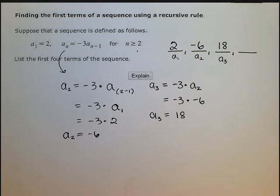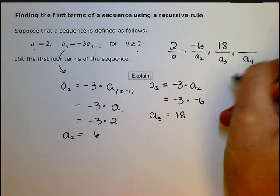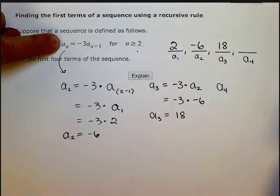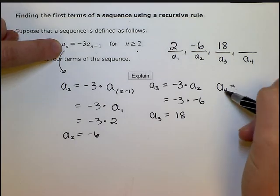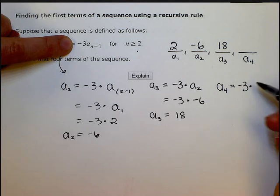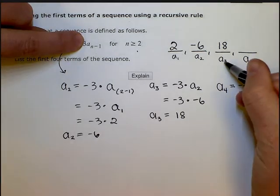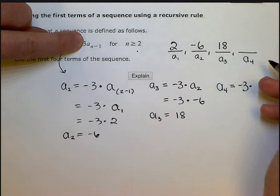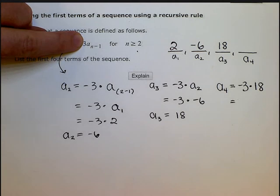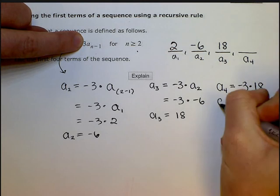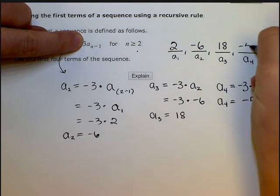Okay, so last but not least, I need to find this a sub 4. I'm going to do a similar thing. Instead of a sub n, I'm trying to find a sub 4. So I'm going to plug 4 in for n. So I have a sub 4 equals negative 3 times a sub 4 minus 1, or the previous term, a sub 3. So I'm going to do negative 3 times 18. Now if I do negative 3 times 18, I know it's going to be negative because it's a negative and a positive. So I'm going to have negative 3 times 18, and I'm going to get negative 54. So I see that a sub 4, or the fourth term of my sequence, is negative 54.